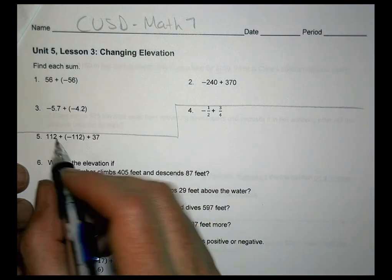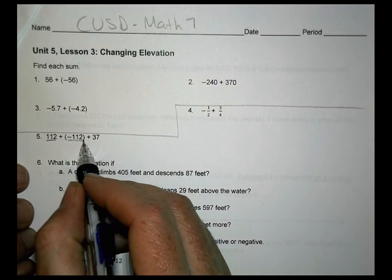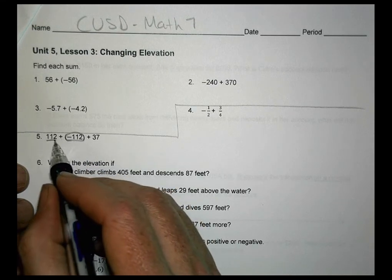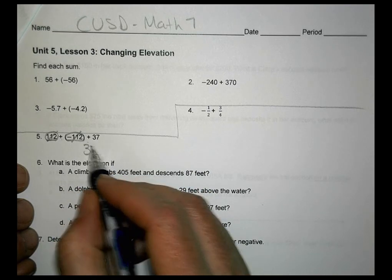So let's take a look at number 5. We have 112 plus a negative 112. So these two values here are simply going to cancel one another out, and you're left with just simply 37.